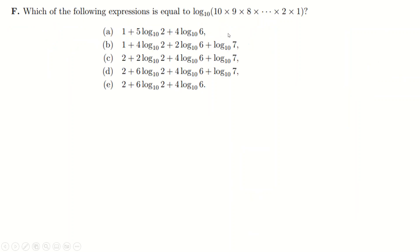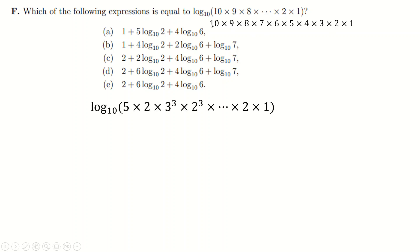Question F is quite nice. You could immediately use log laws, but instead I'll write out all the numbers and express them as prime factorizations. So: 10 = 2 × 5, 9 = 3 squared, 8 = 2 cubed, and so on down to 2 × 1. Then I count how many of each prime appears: how many 2s, 3s, 5s, and 7s.